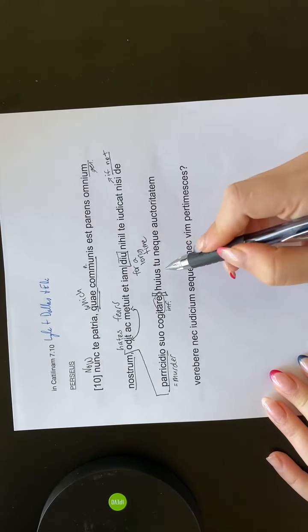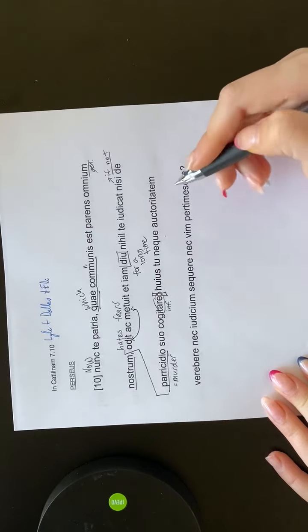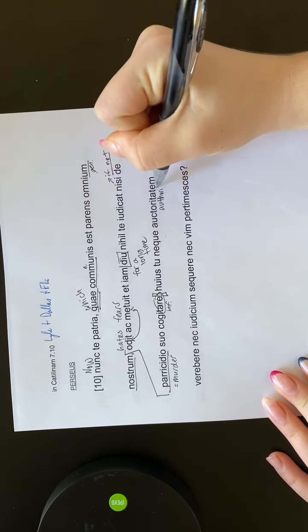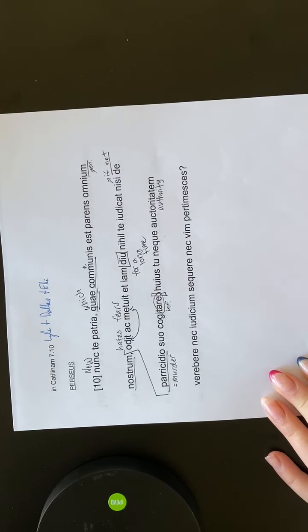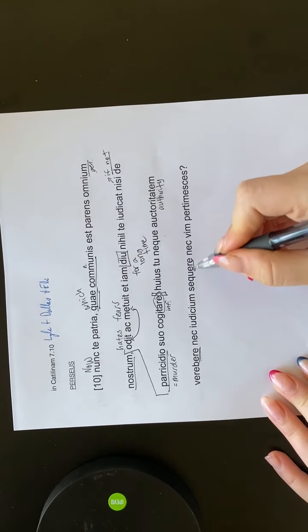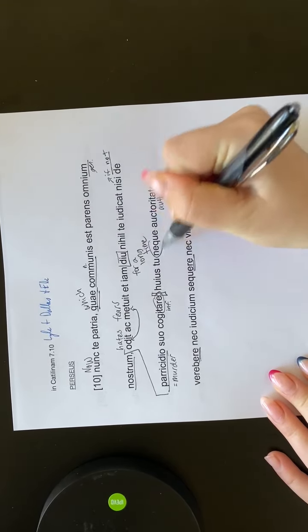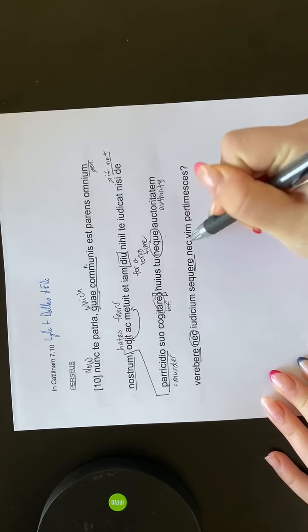Huyas tu neque octoriatetem veribere nec iudicium sequere nec wim pertimescis. So neque is neither nor. So remember that. That shows up a lot with Cicero. Because he's bad.